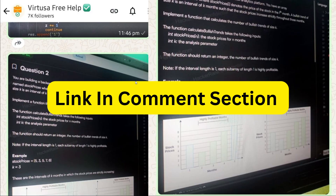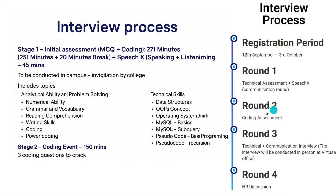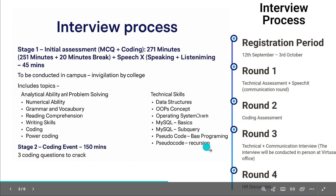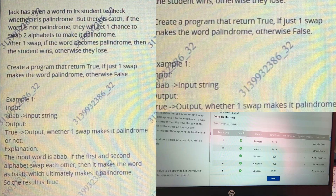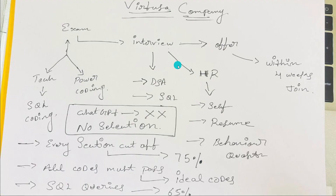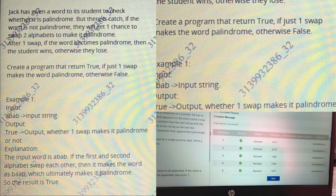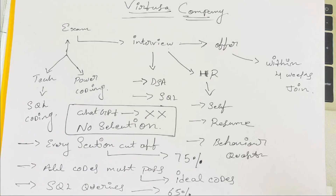After clearing rounds one and two, round three is the technical plus communication interview. It is divided into two parts: a technical interview at the Virtuosa office and an HR interview at the Virtuosa office, likely on the same day. In the technical interview, knowledge of data structures and algorithms, SQL, OOP concepts, and programming languages is very important. They may ask you to write a pseudocode for a given question.